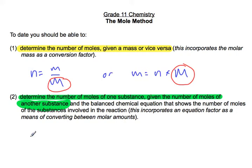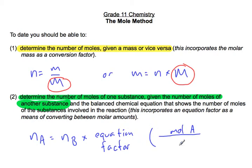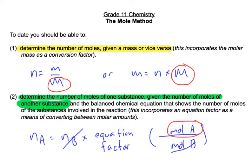If we have a hypothetical number of moles of A that we're looking for, we must have been given a number of moles of B, and we're going to multiply that by our equation factor. We get our equation factor from our chemical equation. We're looking for moles of A, so we're going to have some ratio of moles of A over moles of B — in that way, moles of B divide out and we're left with moles of A. Those are the two processes you have to carry out for the mole method, and you've done them already.